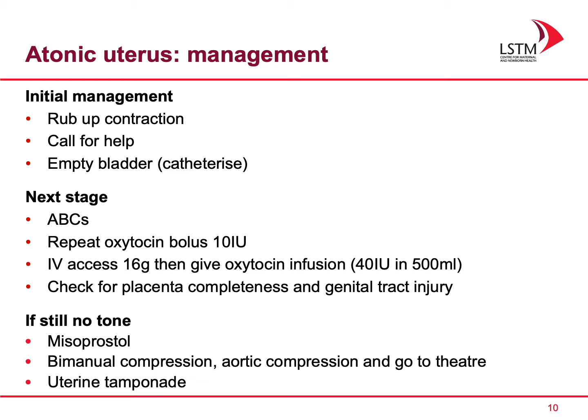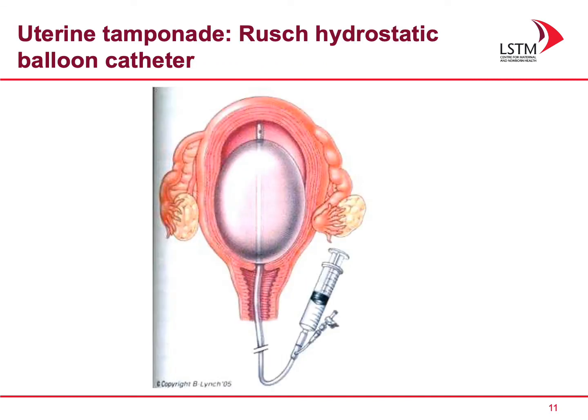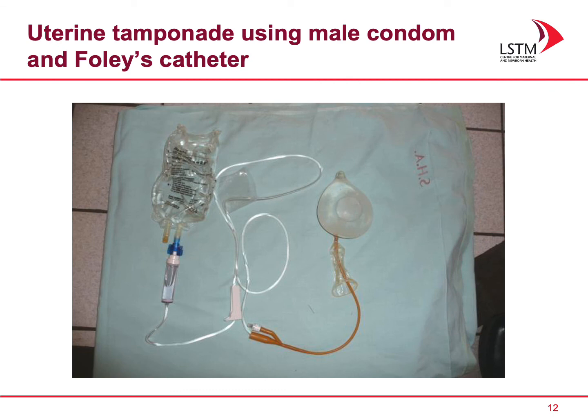If the patient is still bleeding, bring in bimanual compression and aortic compression as you plan to move to theatre. You can also use uterine tamponade. There is the Rusch hydrostatic balloon catheter for uterine tamponade. Because of issues of availability and cost, if you cannot access the Rusch balloon, you can use a male condom connected to a Foley catheter, inserted into the uterus and filled with water.